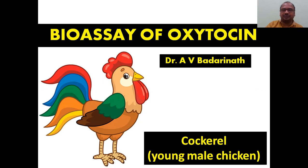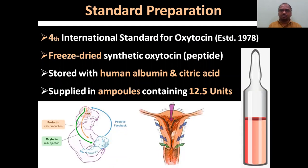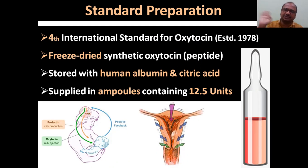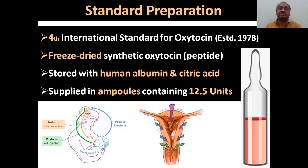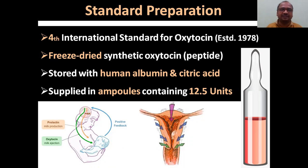The standard preparation used is the Fourth International Standard for oxytocin — not the first to third; those are substandard. It was finally decided that the Fourth International Standard for oxytocin is the reference. It is a freeze-dried synthetic oxytocin. Freeze-drying is one of the drying methods used especially for hormones. This oxytocin is prepared synthetically; it is a peptide — a protein-like structure.